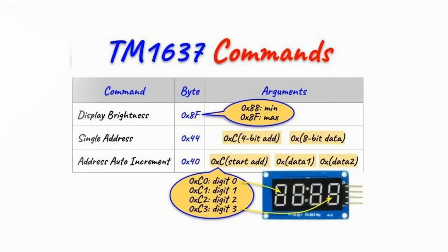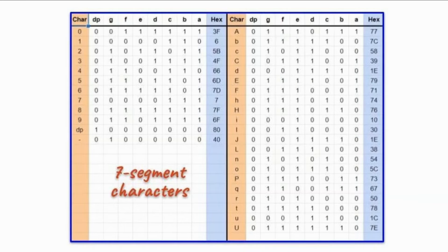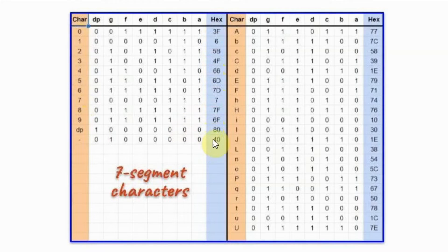This table summarizes the seven-segment characters that can be displayed on the seven-segment digits. We have numerals from 0 to 9 with their corresponding hexadecimal values, and we also have letters with their corresponding hexadecimal values.